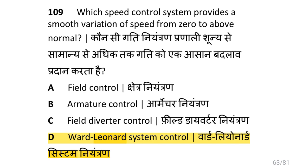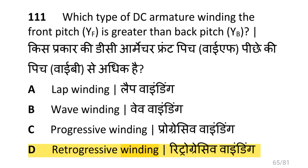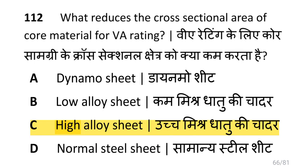Which speed control system provides smooth variation of speed from 0 to above normal? That is the Ward-Leonard system of control. What is the purpose of taps in winding? That is to wrap the conductor. Which type of DC armature winding has front pitch YF greater than back pitch YB? That is retrogressive winding.